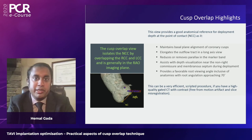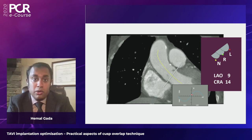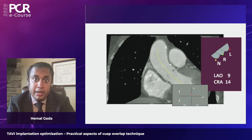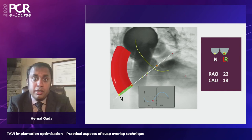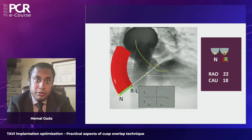You go to the cath lab armed with the planned view, typically a shallow RAO caudal, and begin deployment there. As parallax develops while the valve opens, we return to the slides to clarify the approach. In the traditional coplanar view, the cusps are overlapped to a degree that causes loss of reference to the non-right commissure and the non-coronary cusp insertion. The cusp overlap view overlaps left and right, leaving the non-coronary cusp independent, in a more RAO caudal angulation.